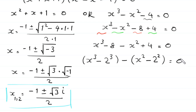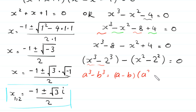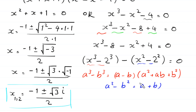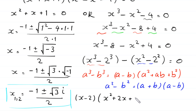Using the identity a³ - b³ = (a - b)(a² + ab + b²) on x³ - 8, we get (x - 2)(x² + 2x + 4). Using a² - b² = (a + b)(a - b) on x² - 4, we get (x + 2)(x - 2). So the equation becomes (x - 2)(x² + 2x + 4) - (x + 2)(x - 2) = 0.